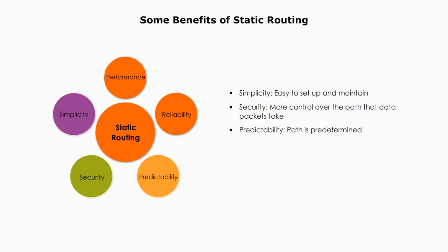Third, predictability — with static routing, the path that data packets take is predetermined, which can make it easier to troubleshoot. Fourth, reliability — static routing can be more reliable than dynamic routing, as it does not rely on algorithms that may fail or be disrupted.